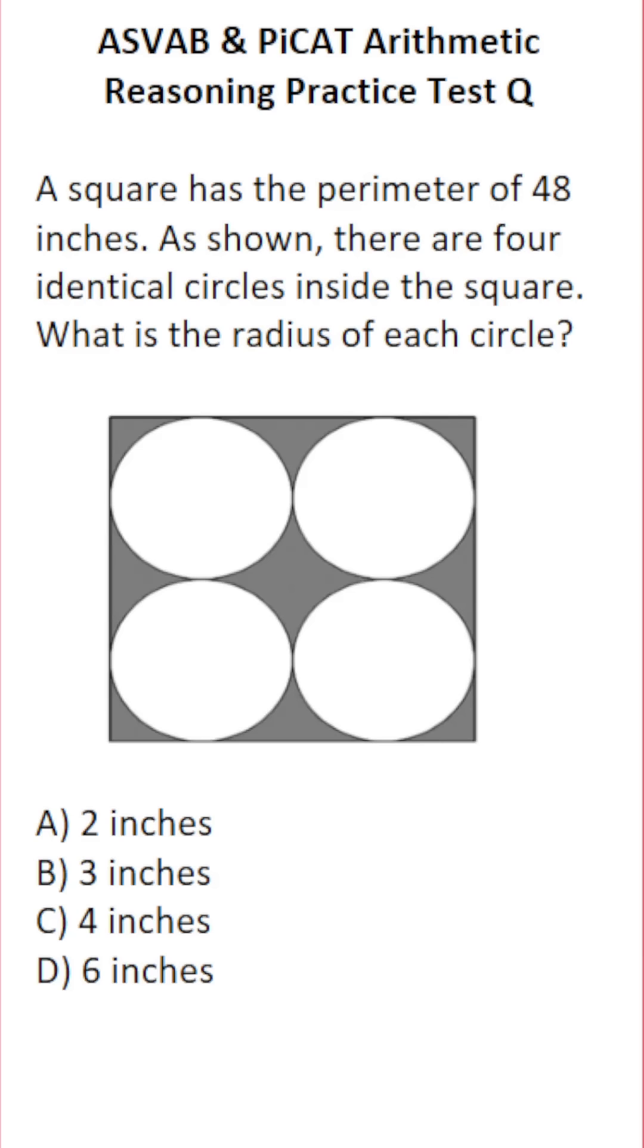So let's first talk about how do we find the perimeter of a square. The perimeter of a square is equal to 4 times its side length, S.